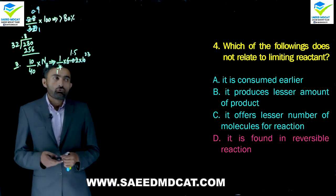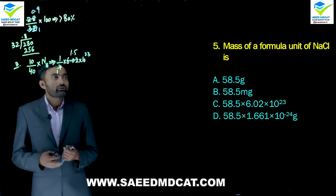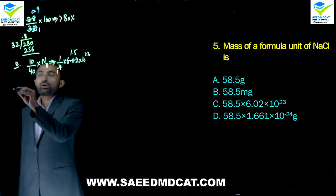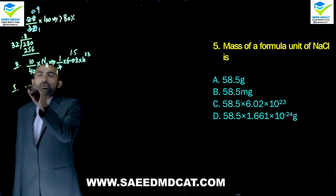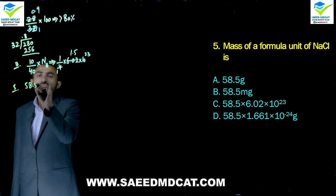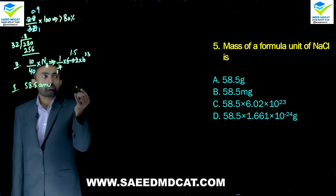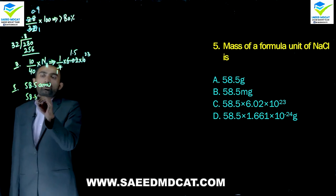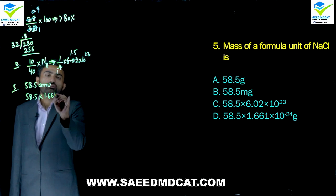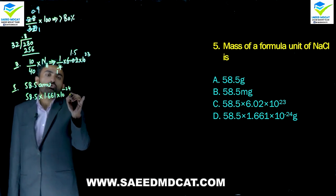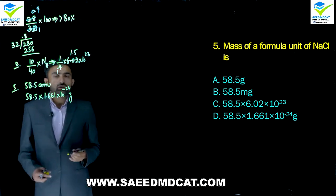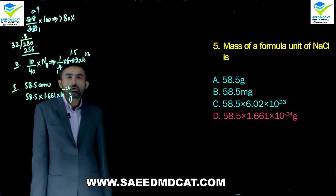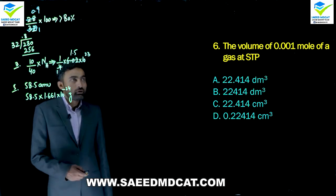Question 5: Mass of a formula unit of NaCl. One formula unit of NaCl has mass 58.5 amu. Since no amu option is given, we convert: 58.5 × 1.661×10⁻²⁴ grams. So delta option (the amu conversion value) is correct.